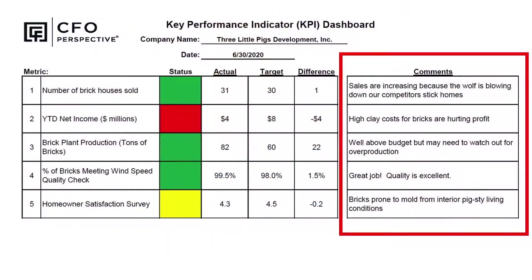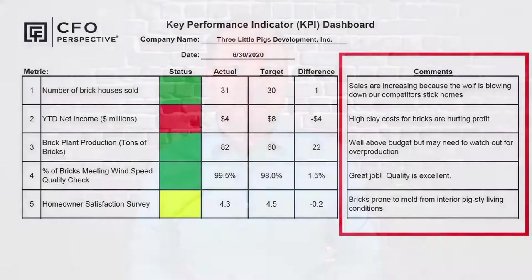Once company leaders decide on implications and actions, those actions need to be communicated to the people in the company who will implement them. A commentary section on dashboards can summarize these steps of interpretation, implication, and action. Commentary helps other employees, owners, and boards understand the implications of ongoing metric levels.